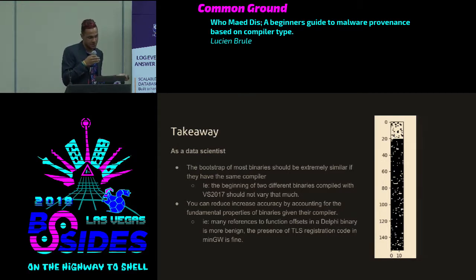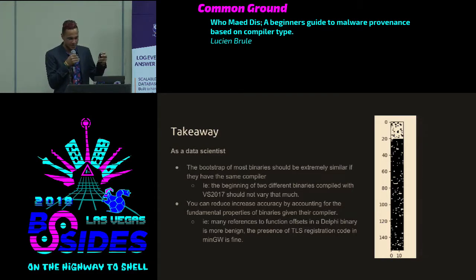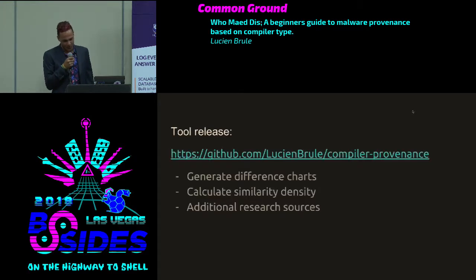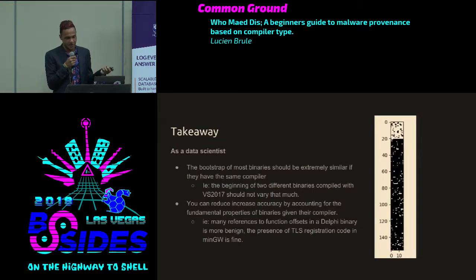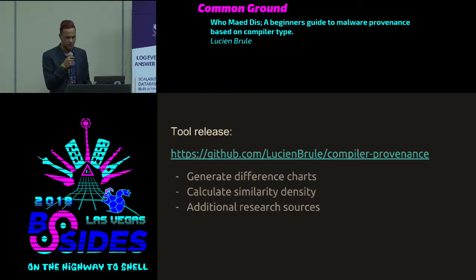You can increase accuracy by accounting for the fundamental properties of binaries given their compiler. References to function offsets in a Delphi binary are more benign, whereas the presence of TLS callback registration code in MinGW is fine. My tool is open sourced — as soon as I click the 'make public' option on GitHub, it'll be released. It generates these different charts, shows similarities throughout the file as a visual readout, and I've also specified additional reading if you think this stuff is cool. That's the end of my talk — thank you.